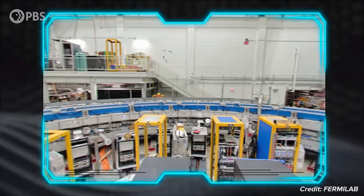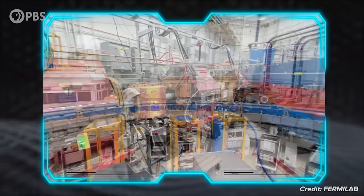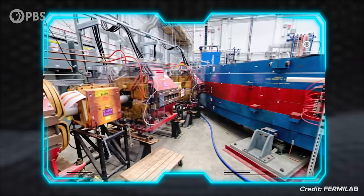At the Fermilab experiment, physicists send muons flying at nearly the speed of light around a 50-foot diameter magnetic tube. The muons interact with the magnetic field, and their own magnetic dipole axes rotate, like a top, just before it falls.